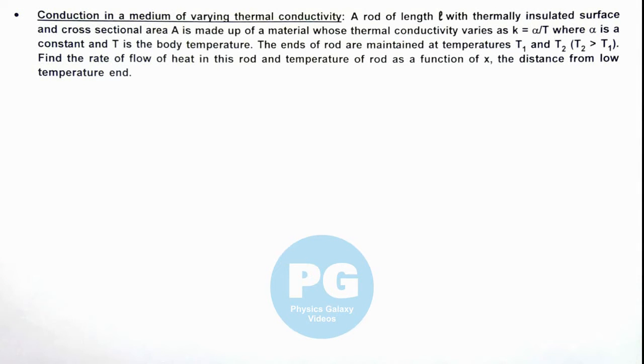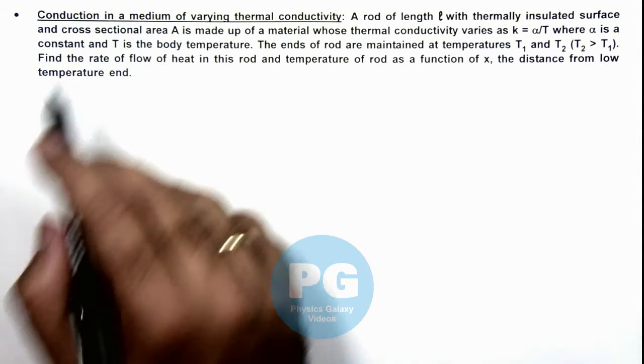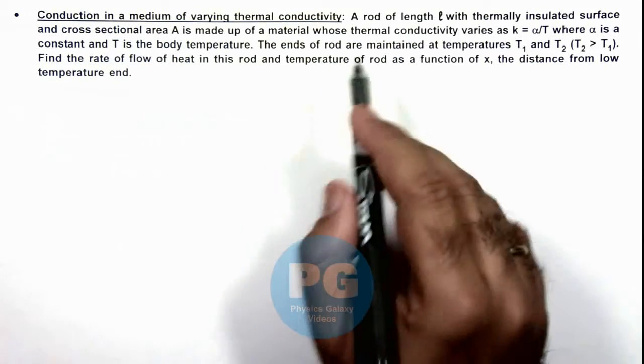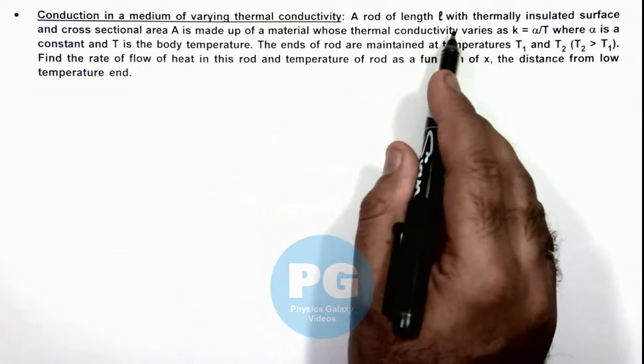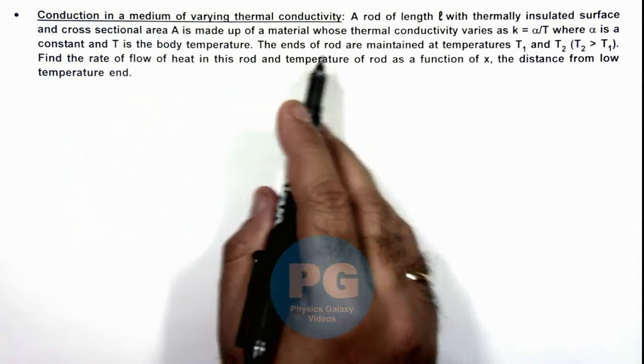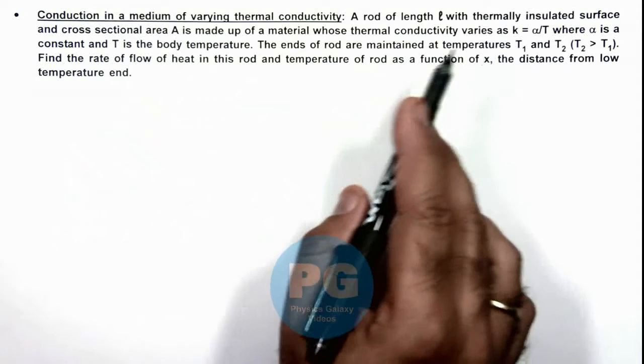In this illustration we'll be discussing conduction in a medium of varying thermal conductivity. We are given that a rod of length L with thermally insulated surface and area A is made up of a material whose thermal conduction varies as k = α/T.